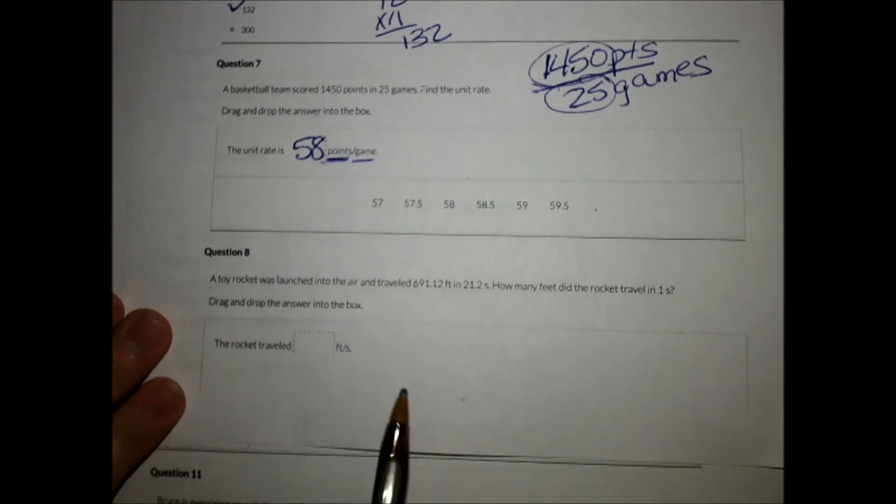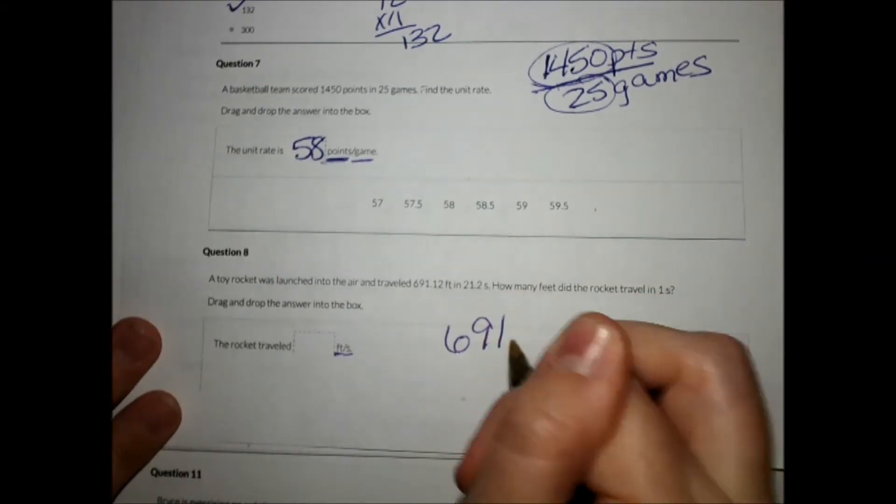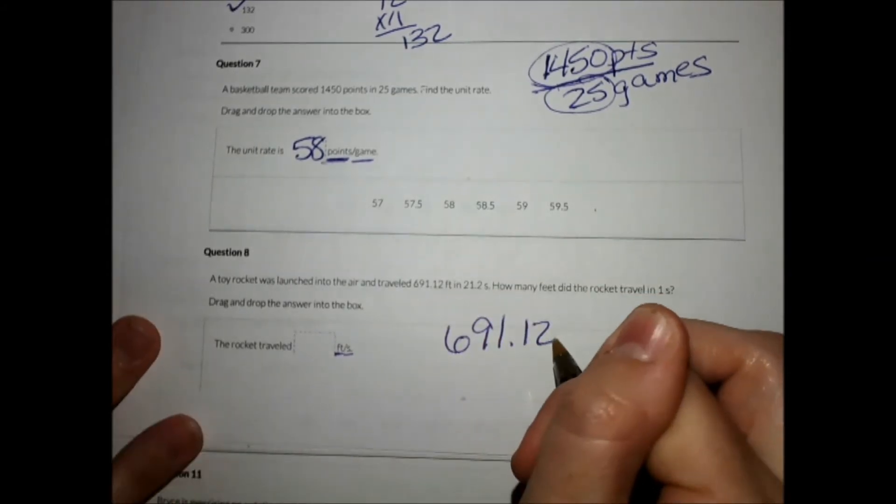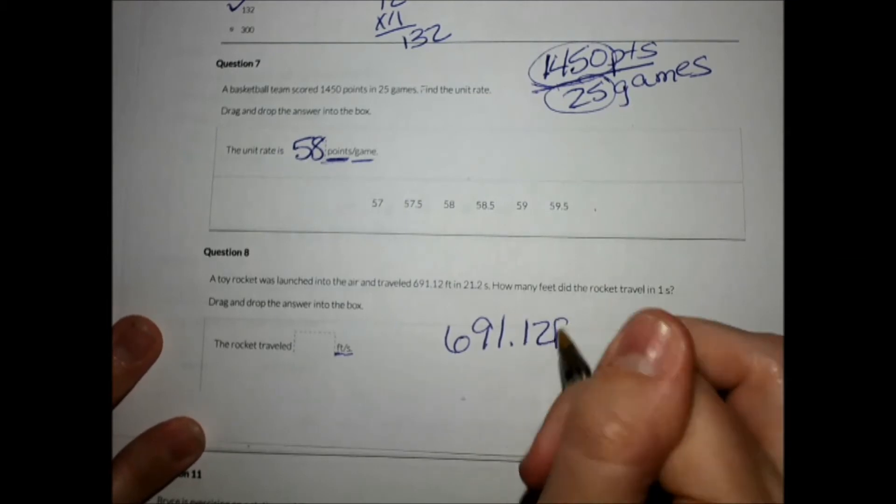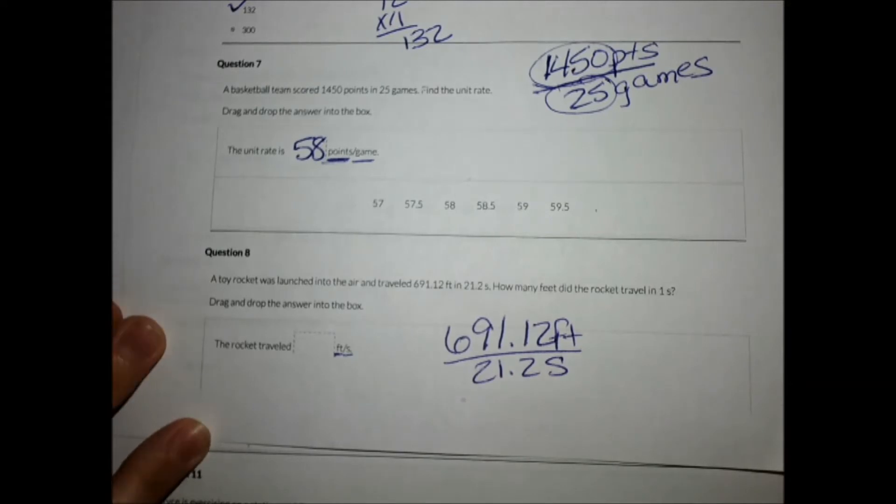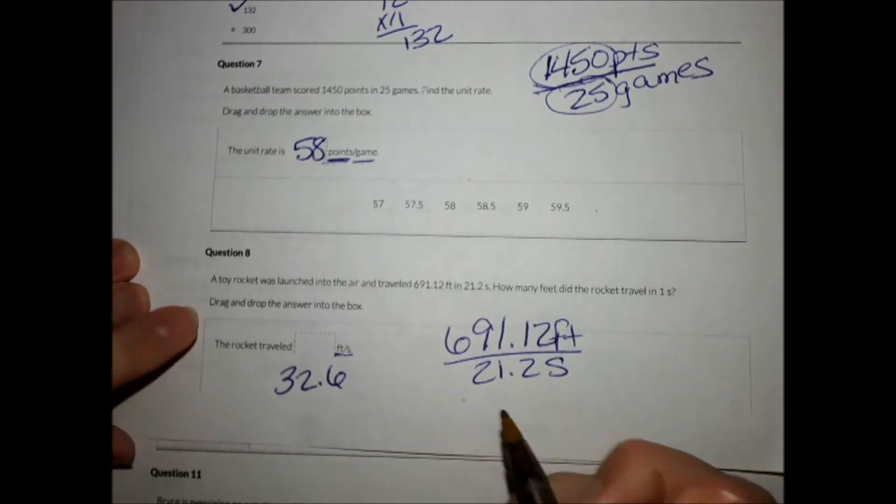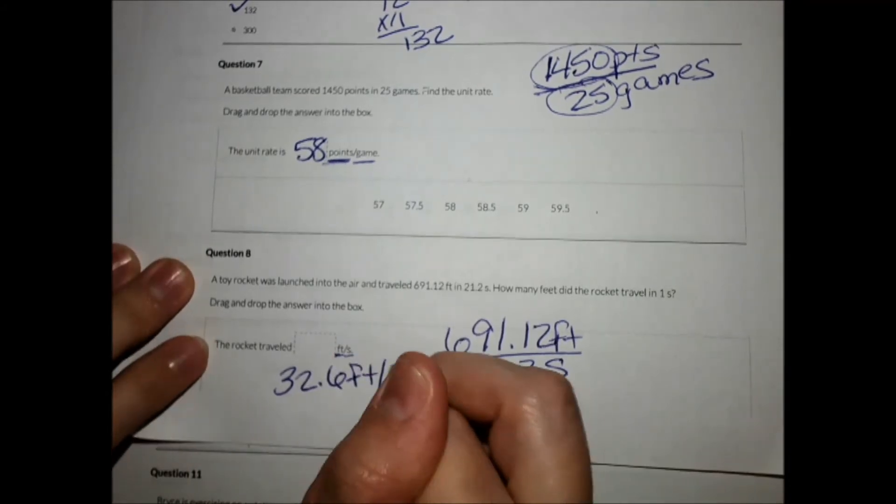This next one, a toy rocket was launched into the air and traveled. Our answer says feet per second, so I'm going to say 691.12 feet in 21.2 seconds. How many feet did the rocket travel in one second? So all we're going to do is do 691.12 divided by 21.2, and I get 32.6 feet per second.